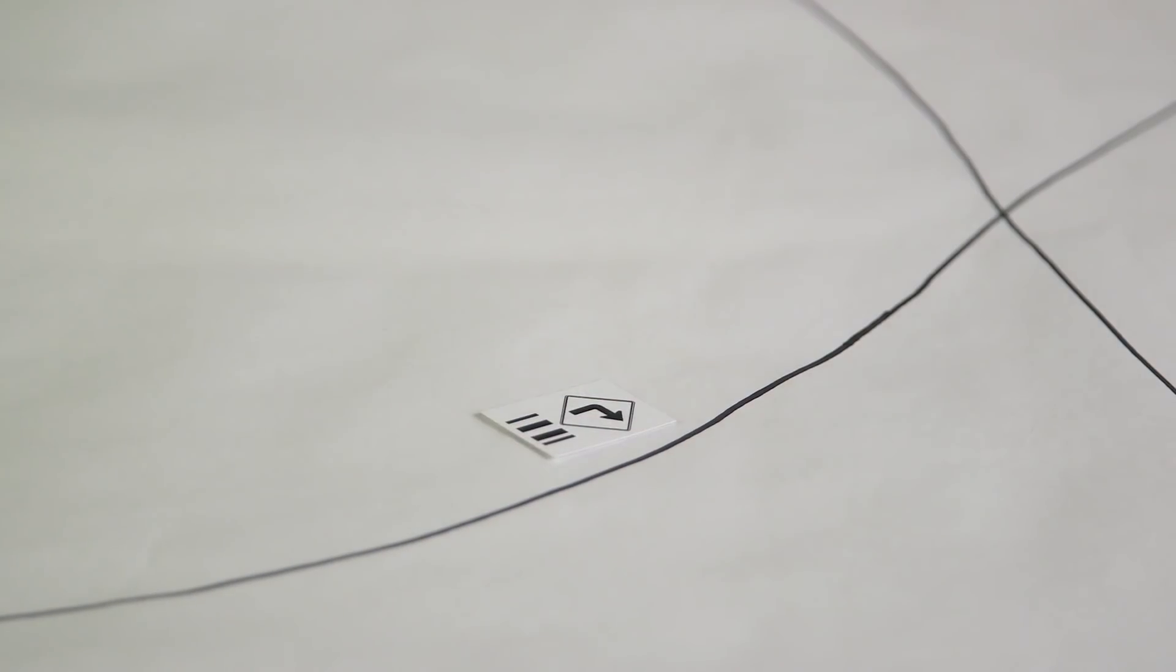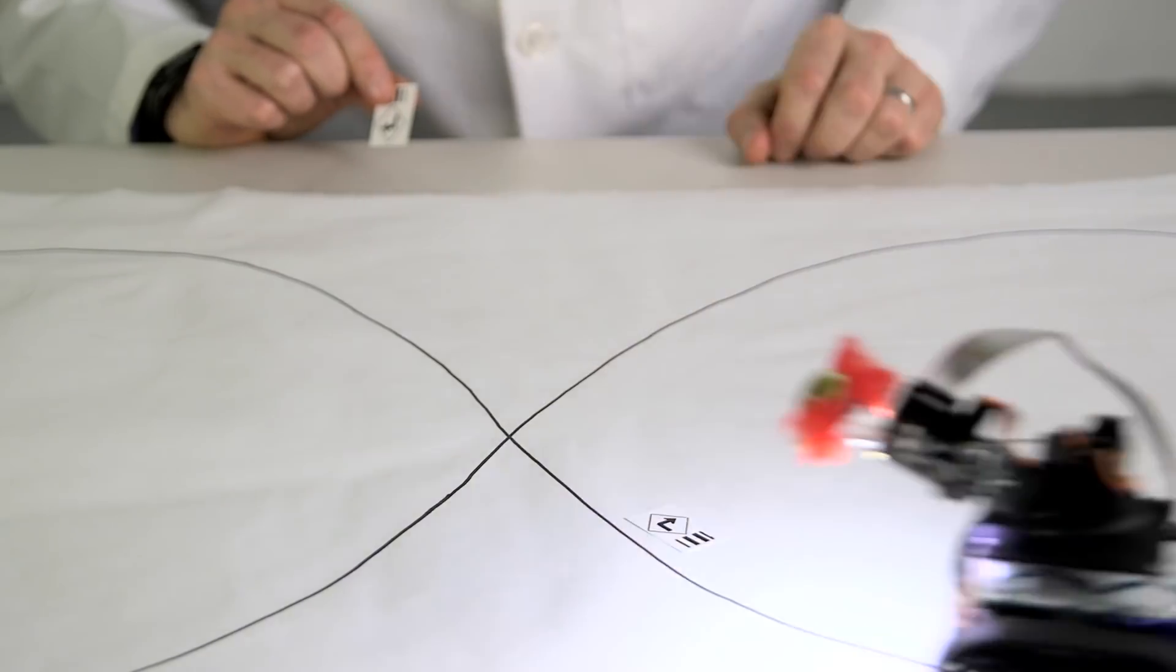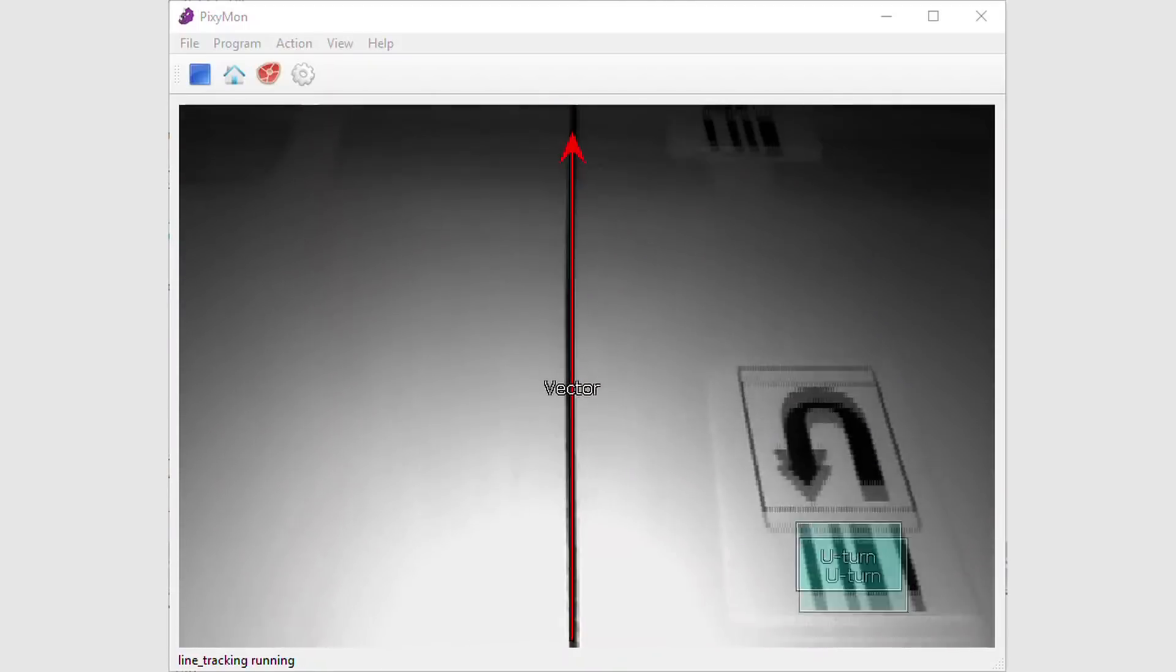The signs are simple barcodes. You can print them out and choose what each sign means, depending on what you want your robot to do. Up to 16 different signs can be identified.